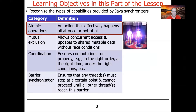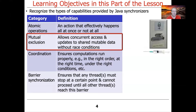Atomic operations are defined to be actions that happen either all at once or not at all. The metaphor for this is a transporter beam from Star Trek, or apparating and disapparating if you're a Harry Potter fan. We'll also talk about mutual exclusion, which allows concurrent access and update to shared mutable state without the hazard of race conditions. The metaphor here is a restroom on an airplane where one person is in there at a time and people queue up and take turns.